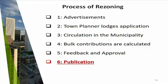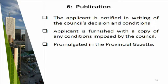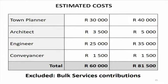After you receive feedback and approval, your last step is publication. You again promulgate in the Provincial Gazette that this property is no longer, for example, residential one — it's now business one. Then you are at the end of your total rezoning process. The estimated cost for this whole process is around 60,000 to 81,000 Rand, and that does not include your bulk services contributions, so it's quite expensive.